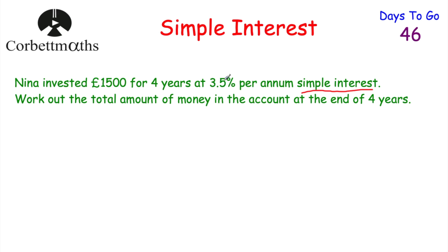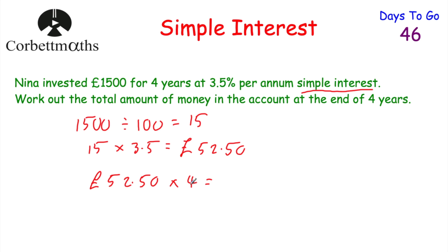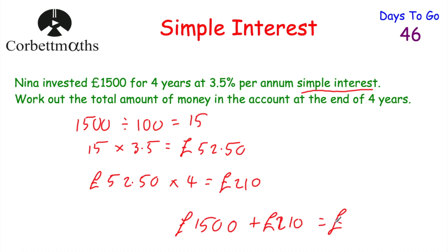Let's work out what 3.5% of £1,500 is. We take £1,500 and divide by 100 to find 1%, which equals £15. Then we multiply by the percentage we want, which is 3.5. So 15 multiplied by 3.5 equals £52.50 — that's how much interest is earned every single year. The money is invested for four years, so we take £52.50 and multiply by four, which equals £210. So Nina will earn £210 of interest. We then take the £1,500 and add the £210, giving us £1,710.